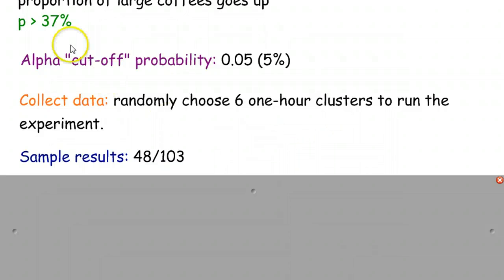Now, this is more than 37%. The question is, is it more enough? Is it high enough to actually convince us that it's more than just random chance? It actually was what we were doing. Was it the asking them if they want a large that made the difference?